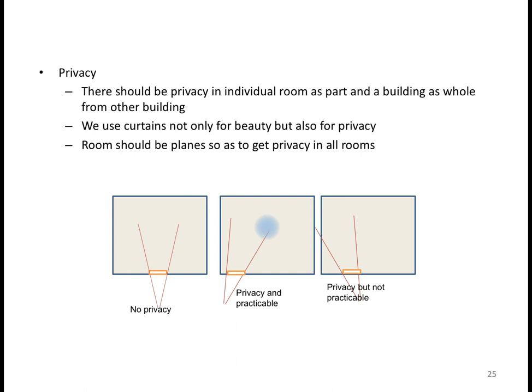For external privacy, we may provide boundary walls or grow tall trees near the boundary walls to control privacy. For inside the room, the position of doors and curtains can be managed so that people living inside get proper privacy.